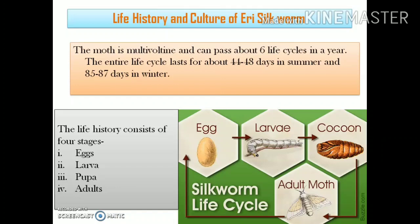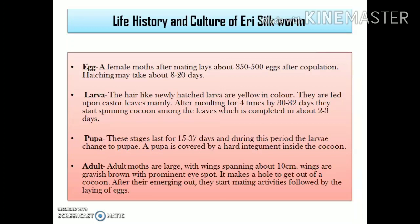The life history of the Eri silkworm also has four stages: egg, larva, pupa, and adult. The life cycle starts with the egg, then the larval stage, then the pupal stage where the pupa is covered by a cocoon, and finally the adult moth stage, which gives rise to eggs once again.